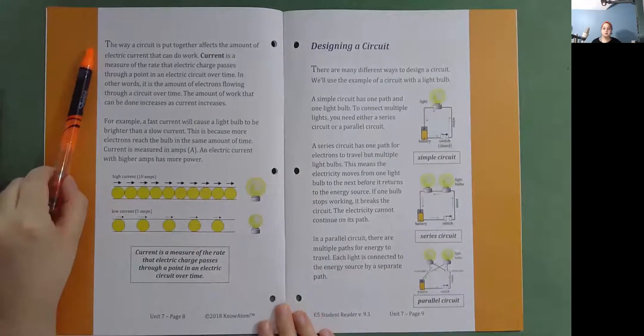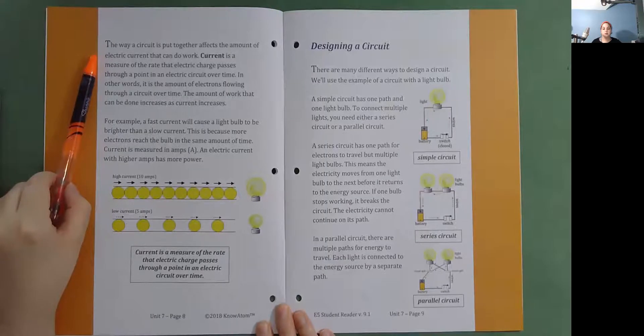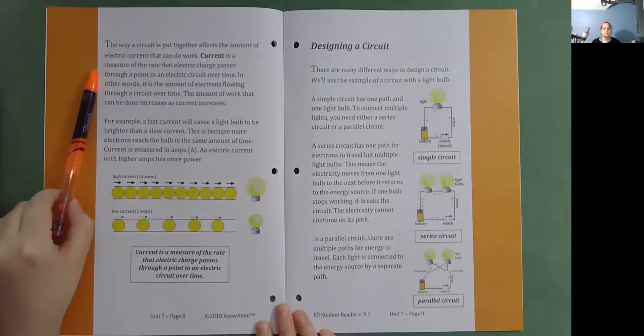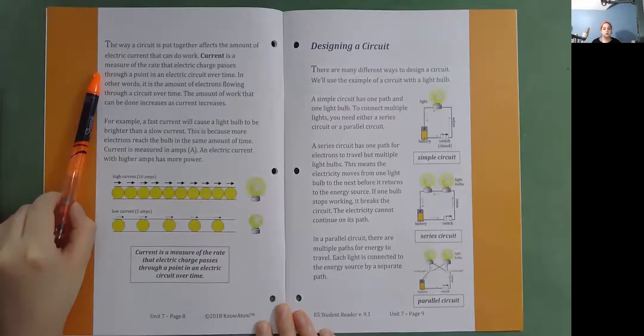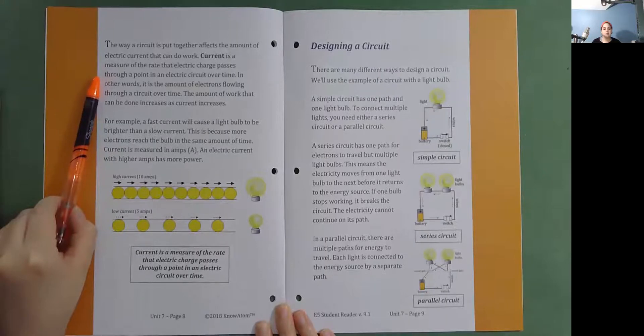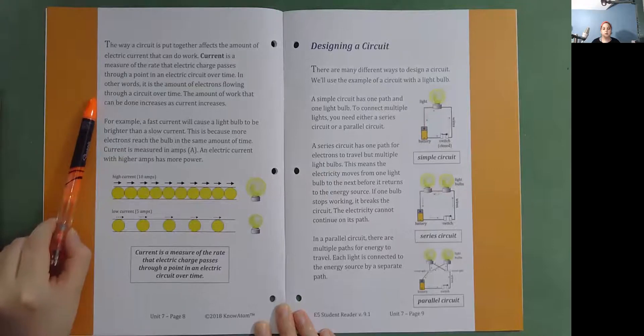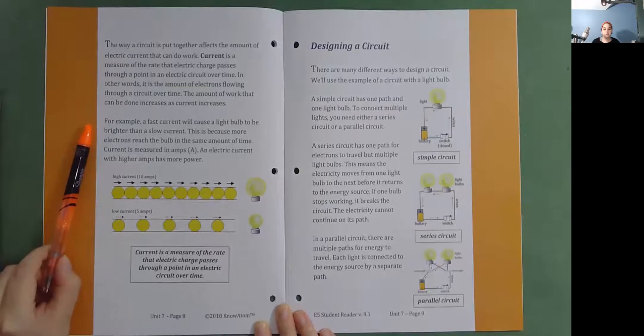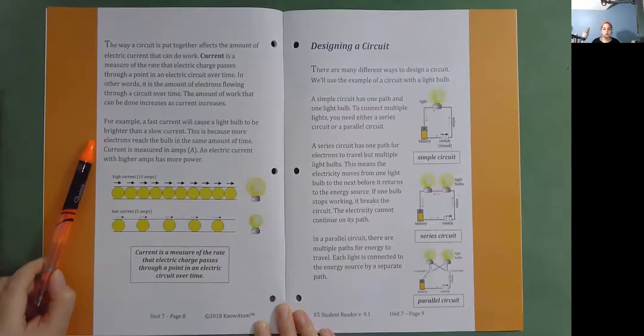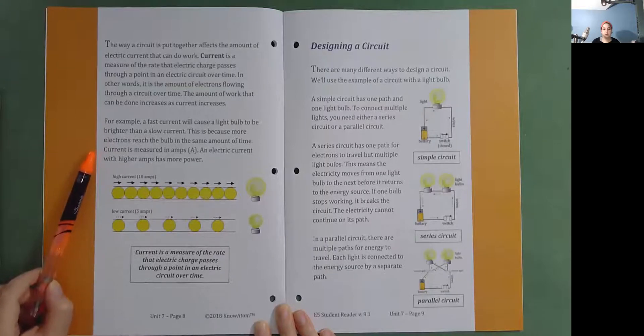The way a circuit is put together affects the amount of electric current that can do work. Current is a measure of the rate that electric charge passes through a point in an electric circuit over time. In other words, it is the amount of electrons flowing through a circuit over time. The amount of work that can be done increases as current increases. For example, a fast current will cause a light bulb to be brighter than a slow current. This is because more electrons reach the bulb in the same amount of time. Current is measured in amps. An electric current with higher amps has more power.